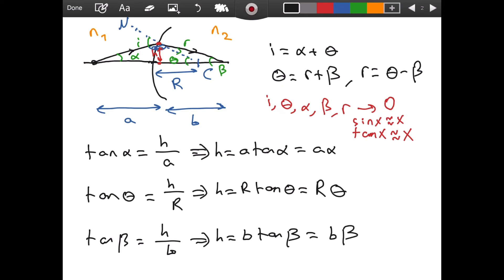Now, I can solve for alpha, theta, and beta. And if I do that, I am going to get alpha is equal to h over a. Then theta is equal to h over R and beta is equal to h over b.